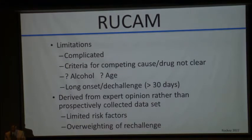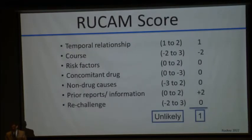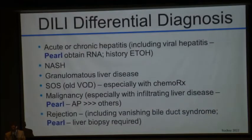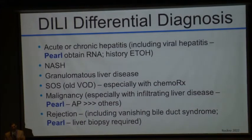RUCAM also overweights re-challenge, which almost never happens. In our patient, the RUCAM score was 1, which is unlikely. The patient got minus points for course because of a very long de-challenge. When in fact this patient had what appeared to be a classic nitrofurantoin-induced drug-induced liver injury.